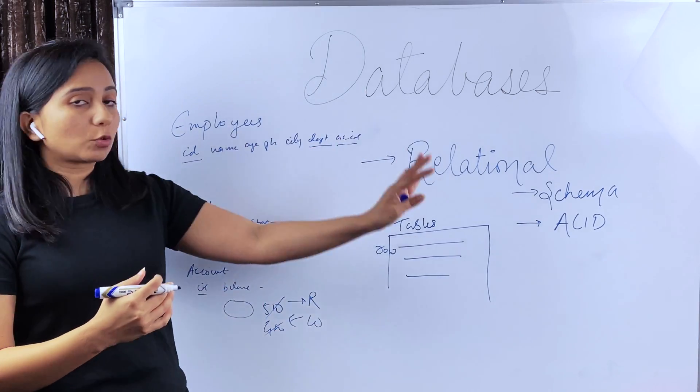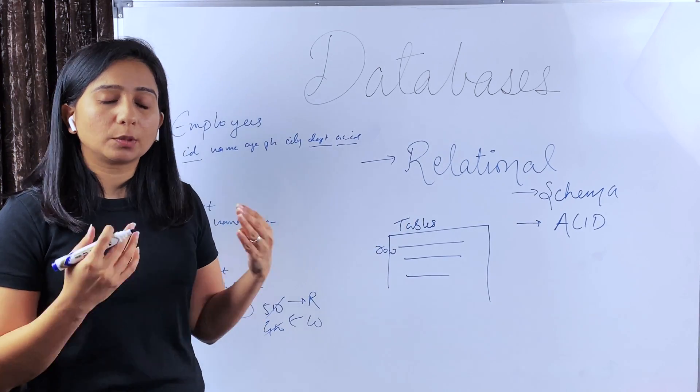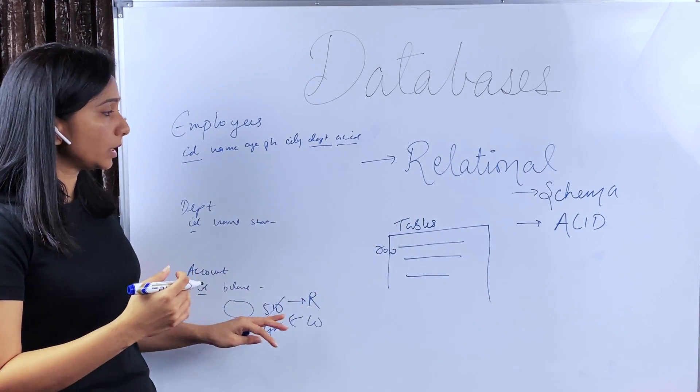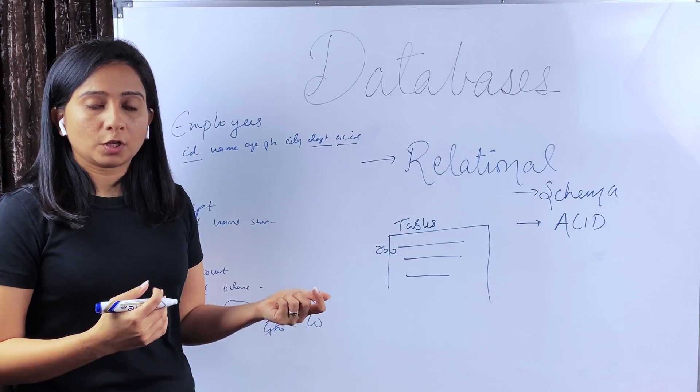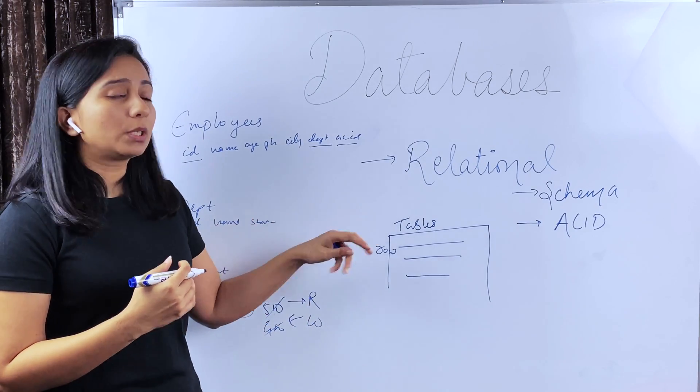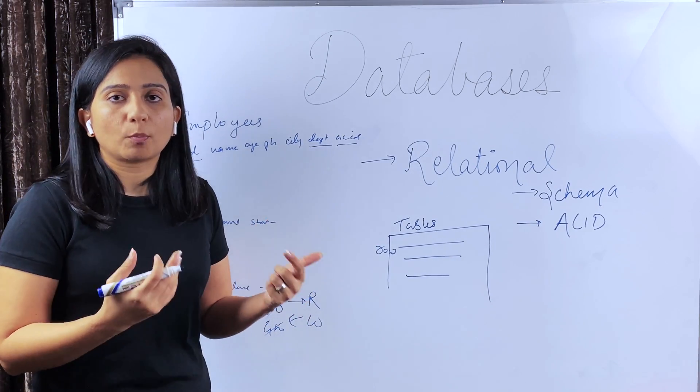But when the table size grows and the data set becomes huge, it becomes increasingly complex to add new columns. And also when the data size grows and the queries require multiple properties to be fetched from different tables, the joins can become expensive. So that is the case when relational DBs don't show much performance as expected.